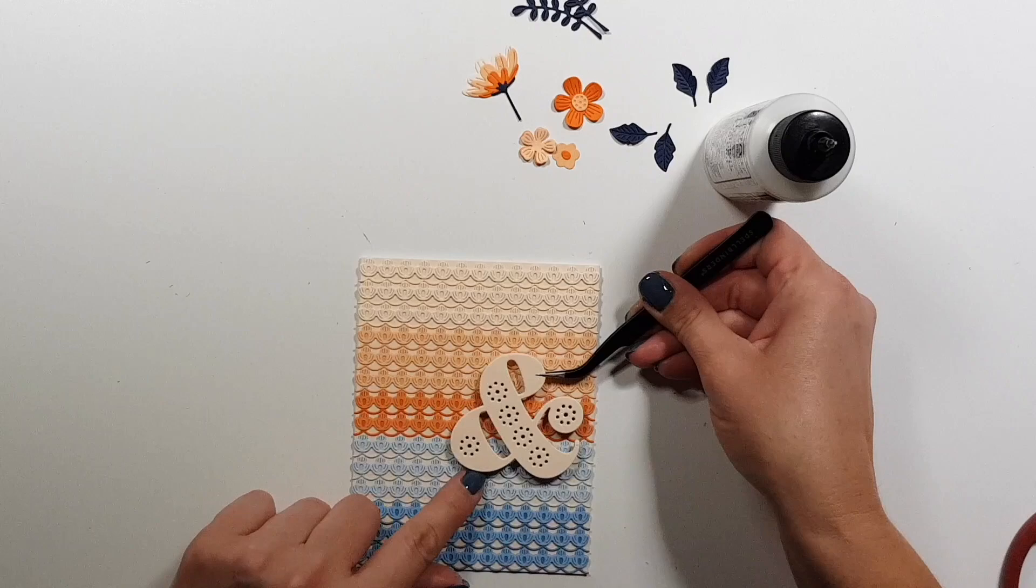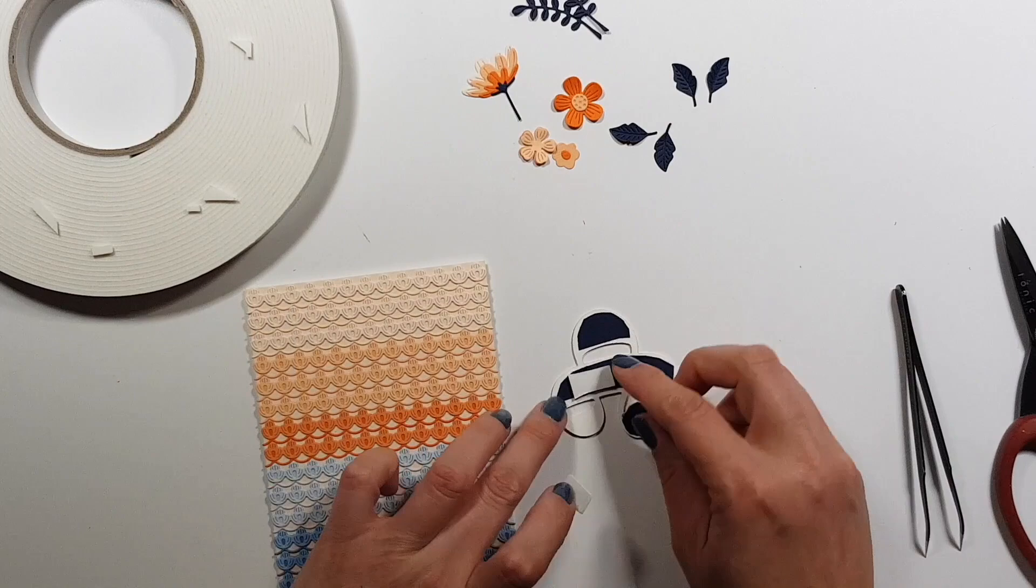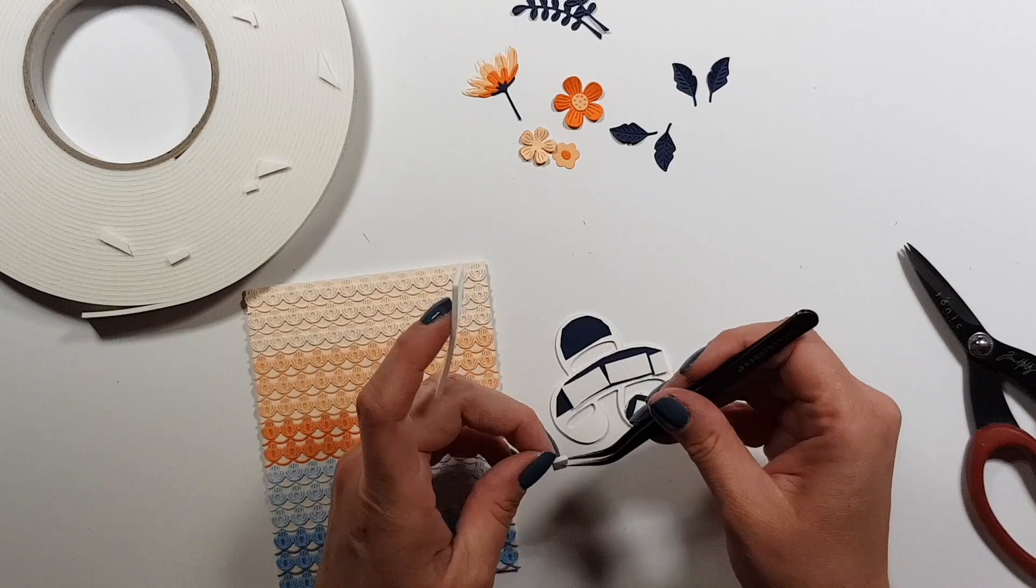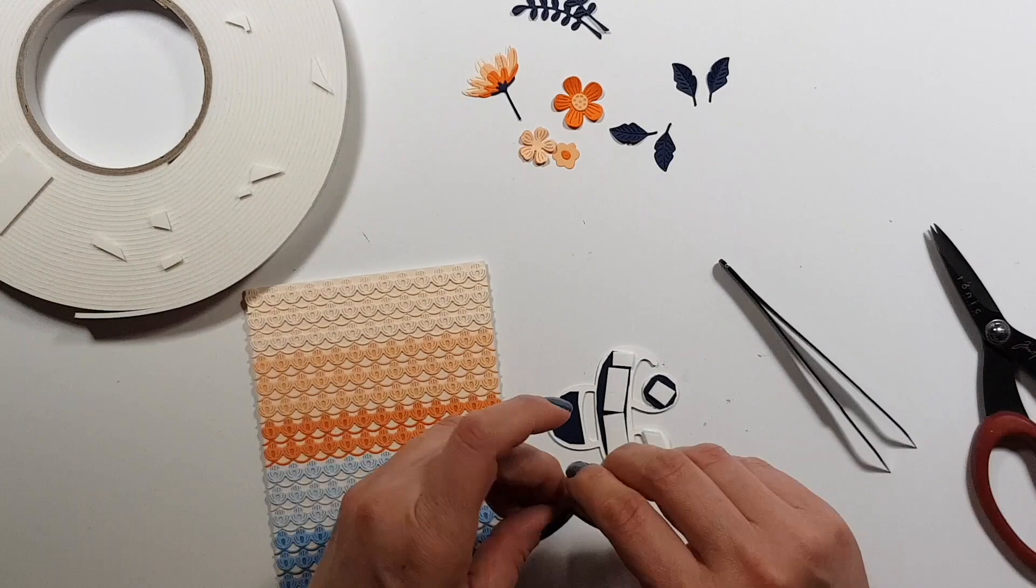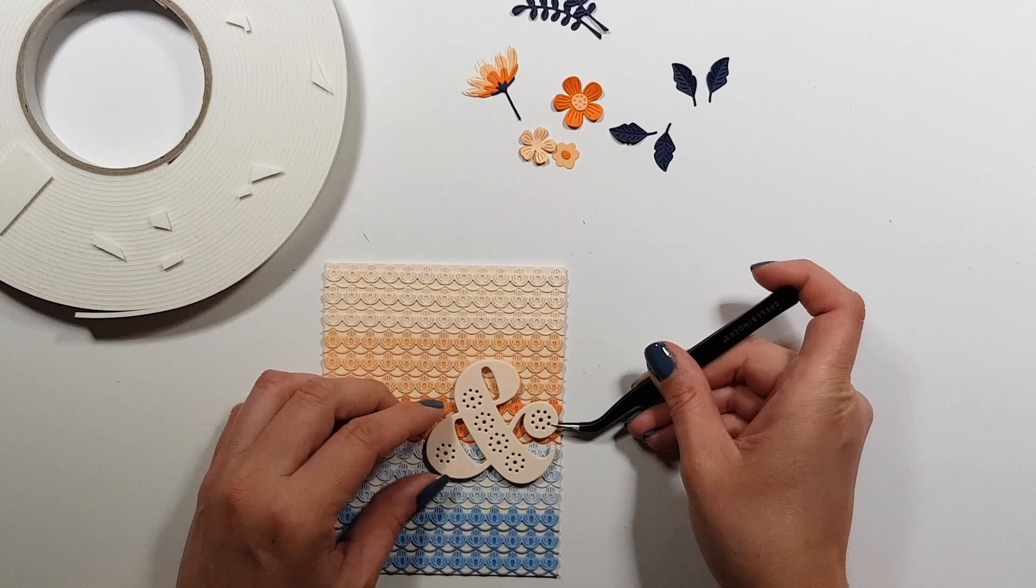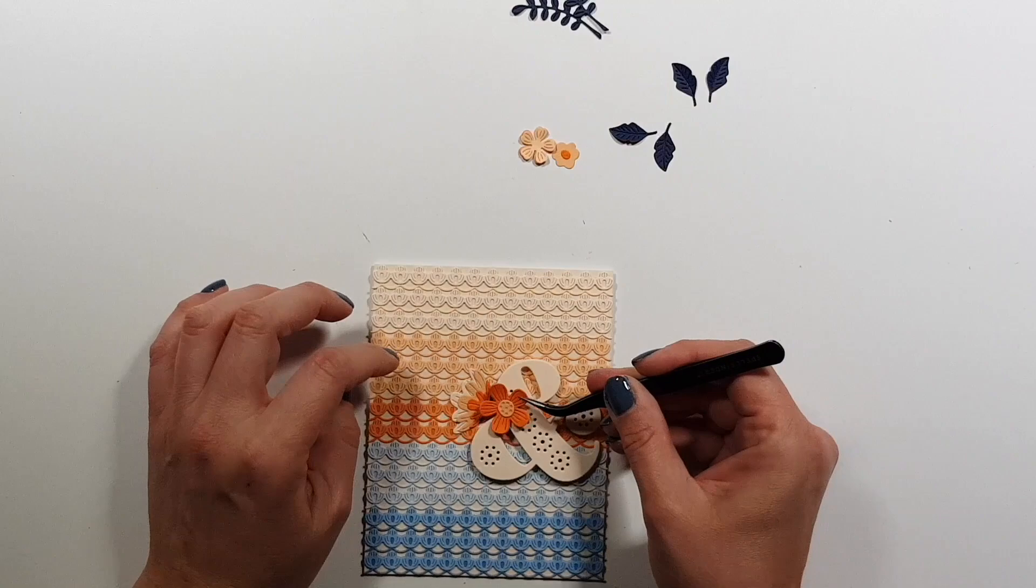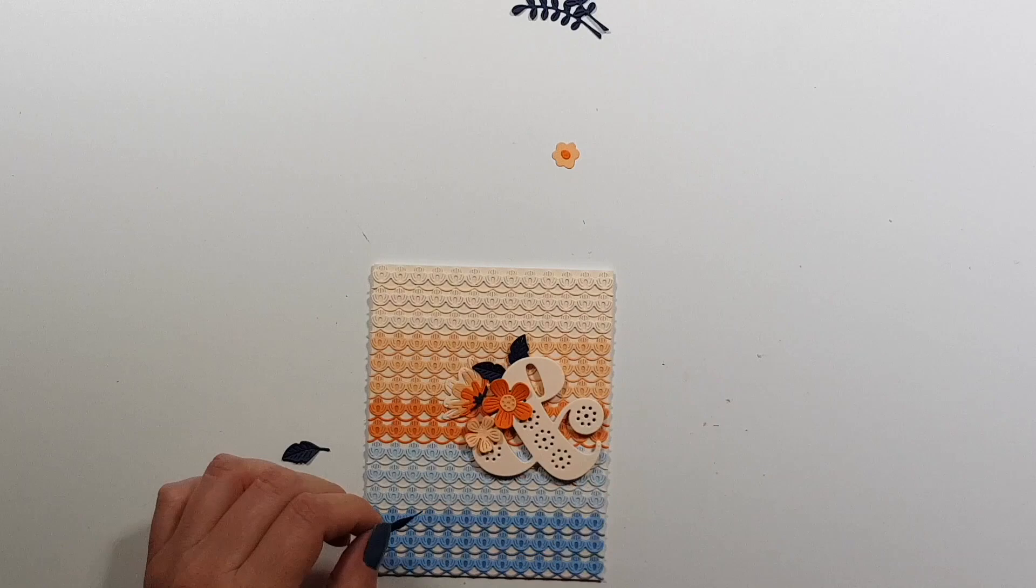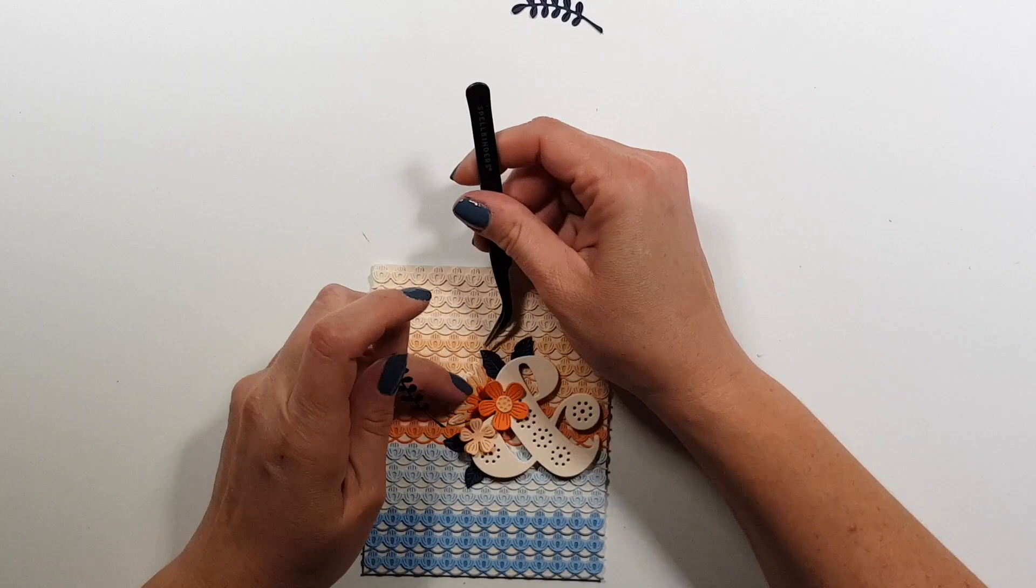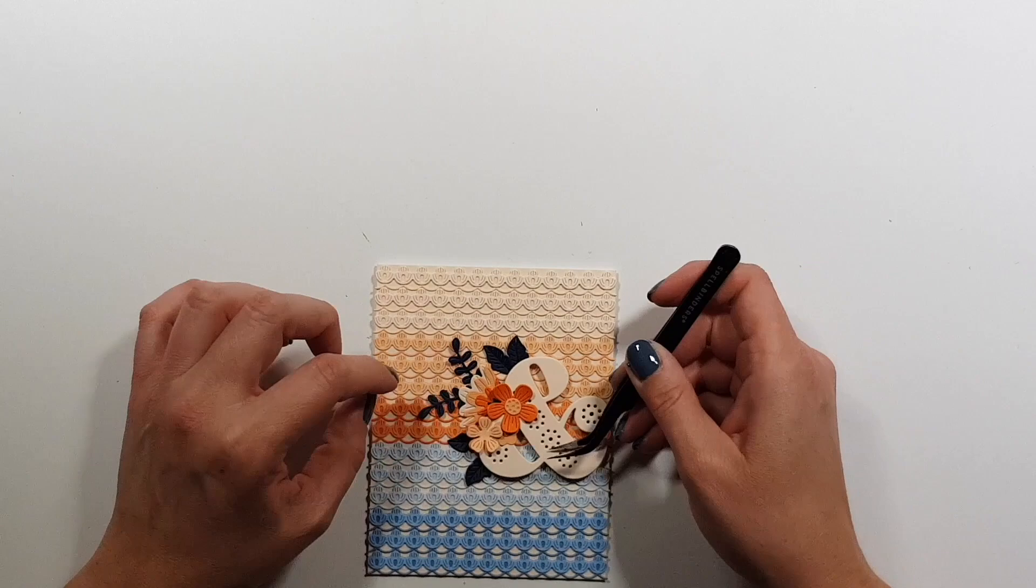It's gonna be a very simple card. I wanted to keep that background, I did not want to cover it up since I thought it was really beautiful. So I'll just create one focal point on the card which is gonna be the ampersand and then a cluster of flowers off to the left side. And here I came in with some navy cardstock as well just for it not to be all the same color as the background and so that it stands out a little bit more.